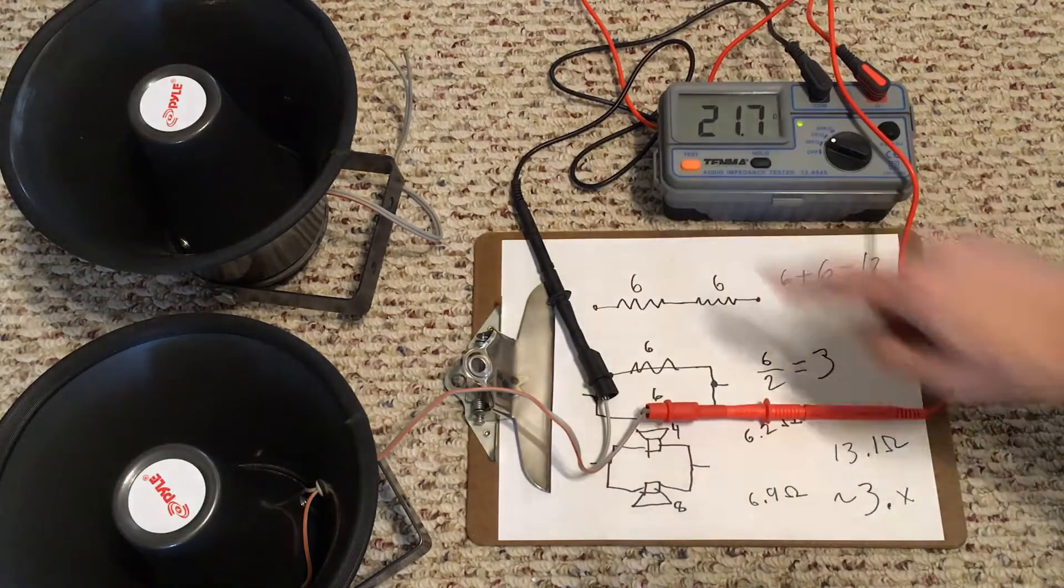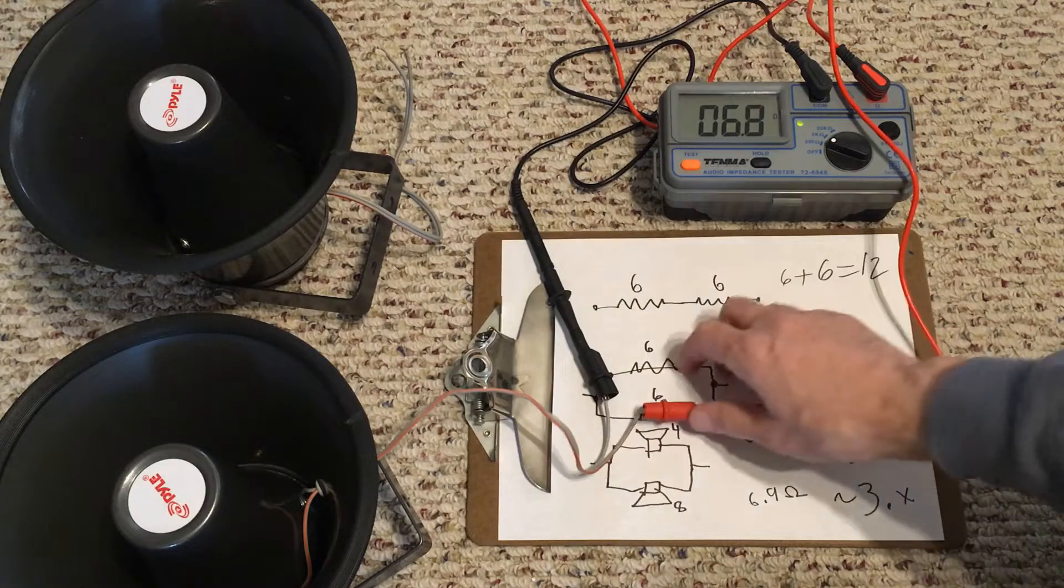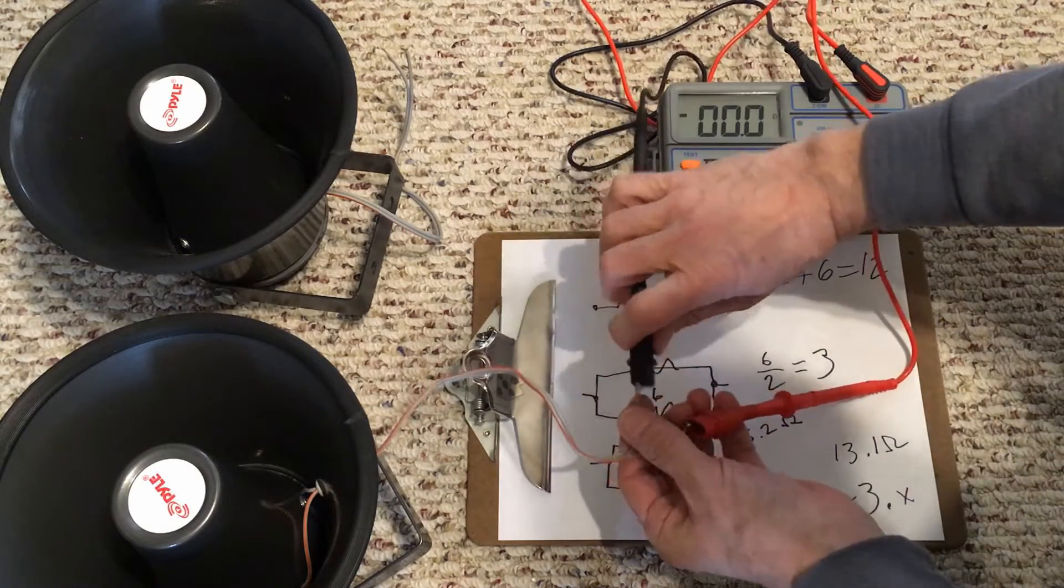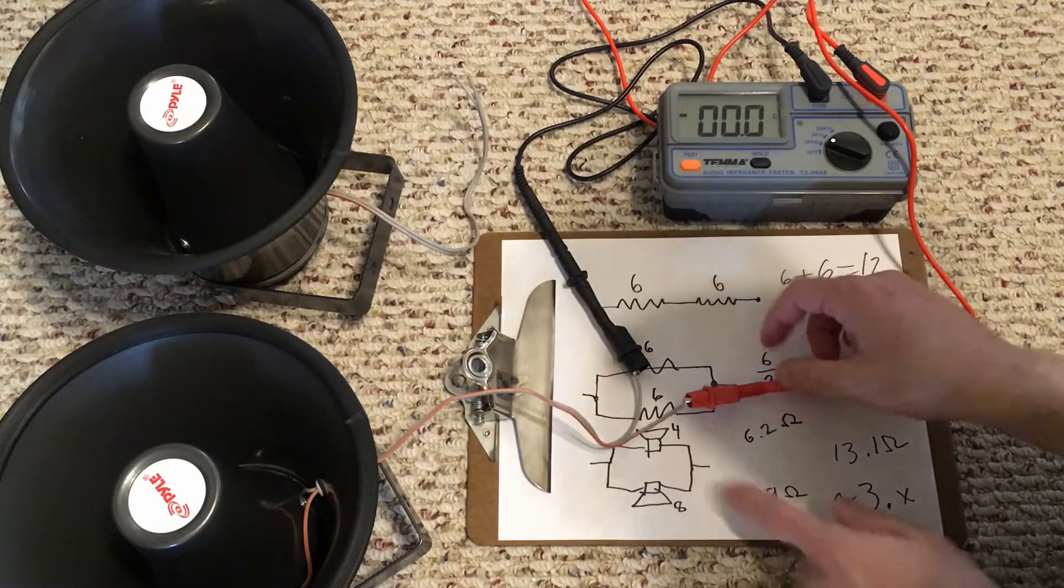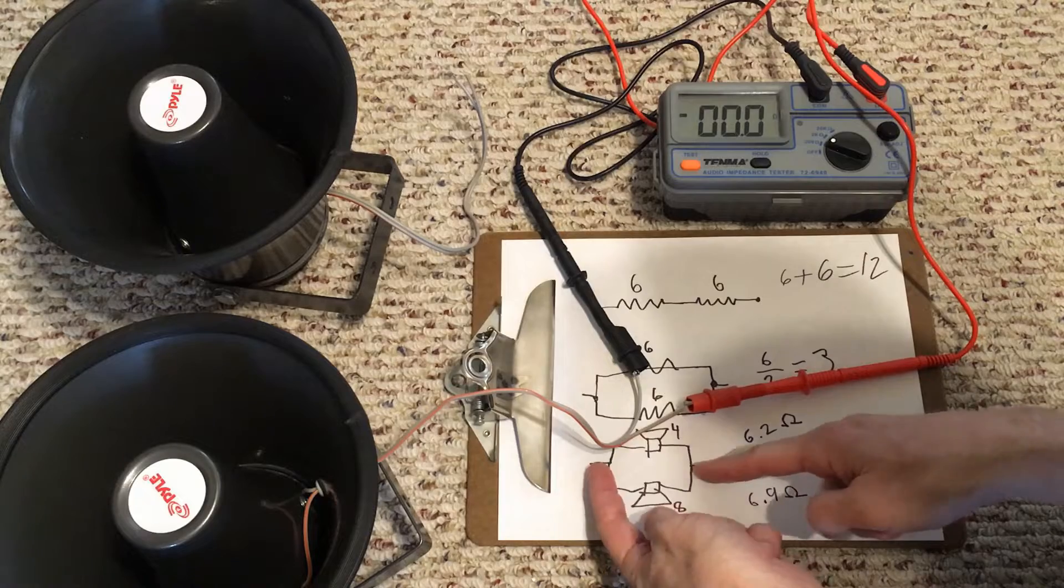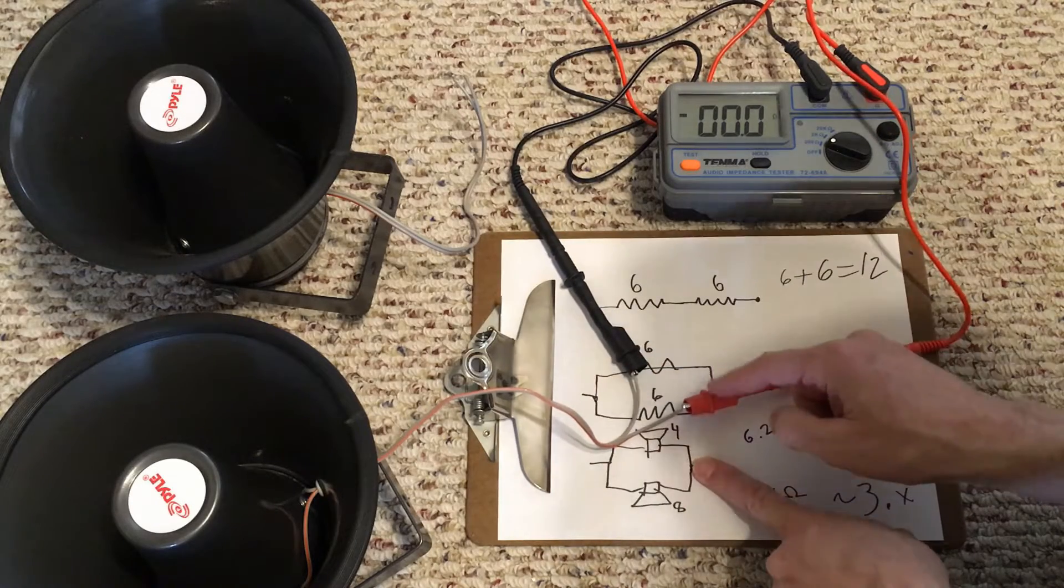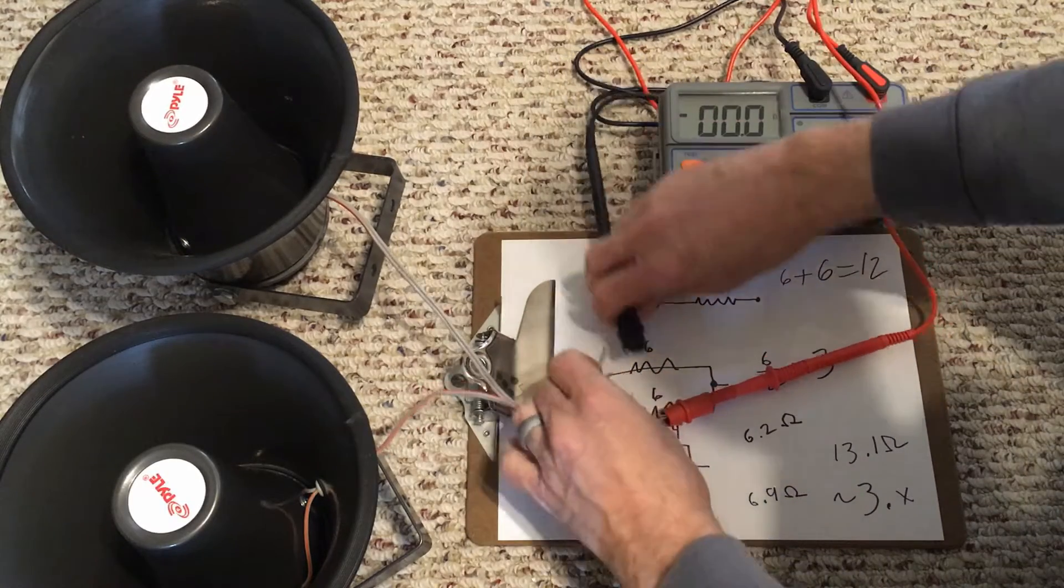That beep is the signal that you see going through. 6.8. And then we're going to put these in parallel, so we've got our feed. Each speaker is going to go to one clip and each speaker is going to go to the other clip, so this should be our lower number.